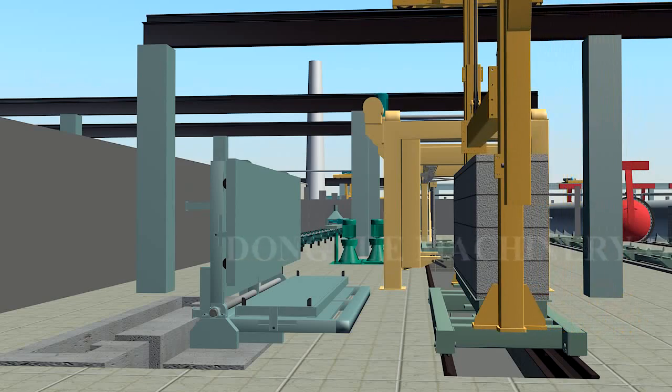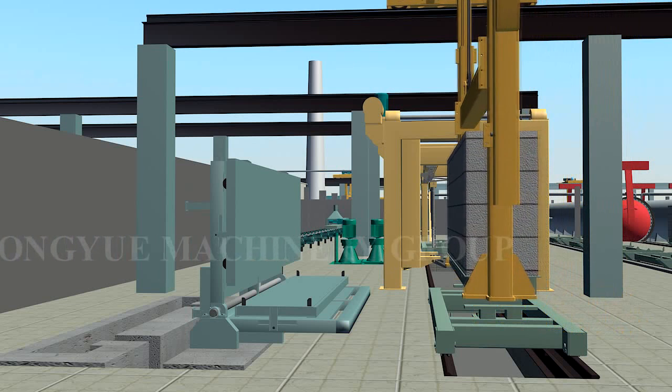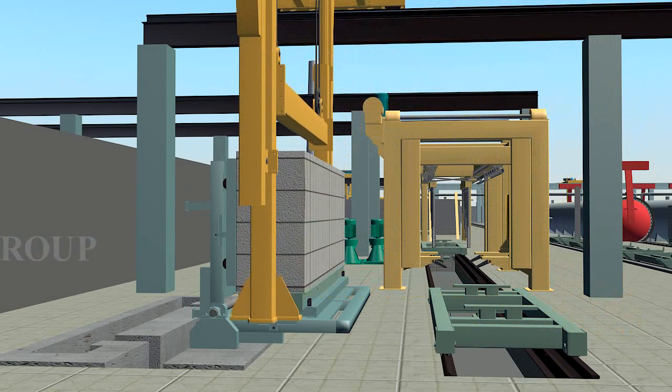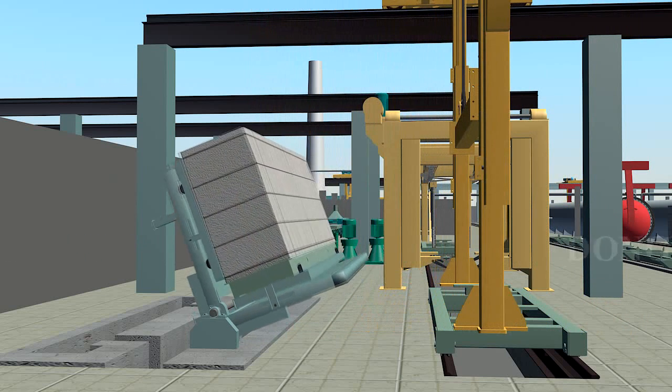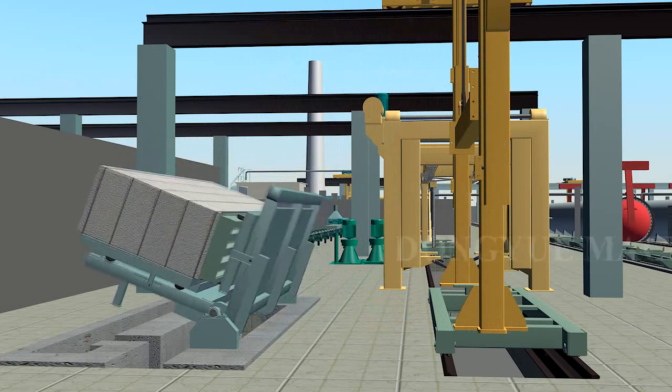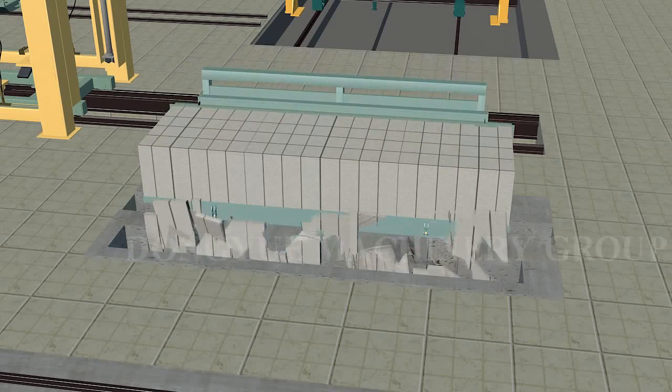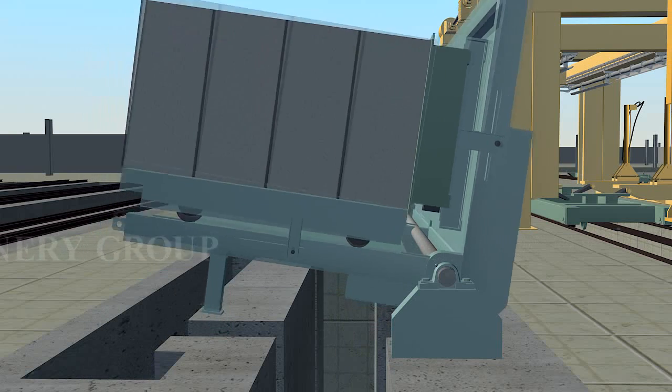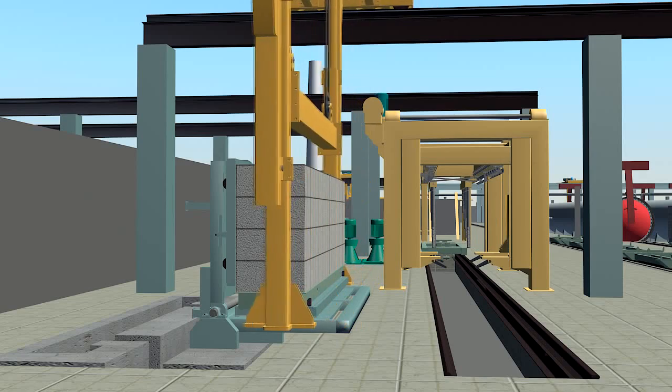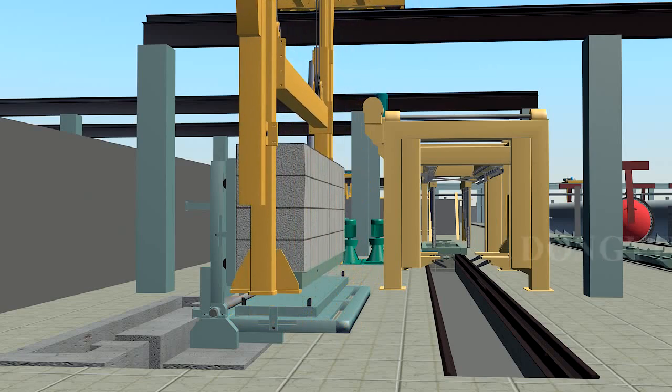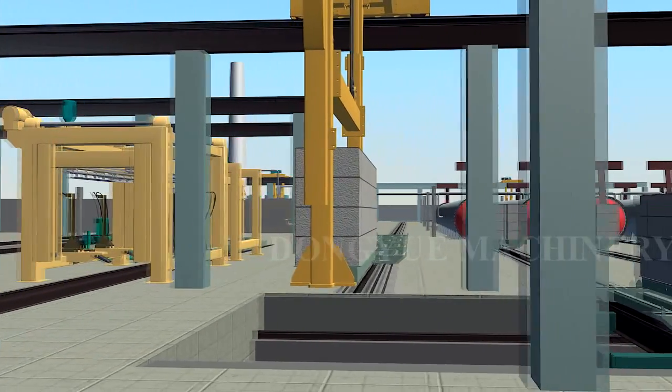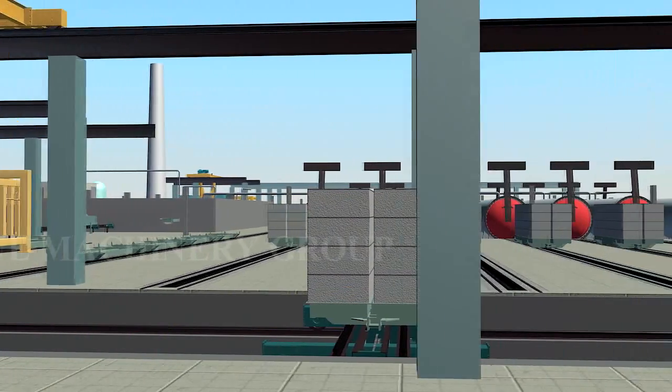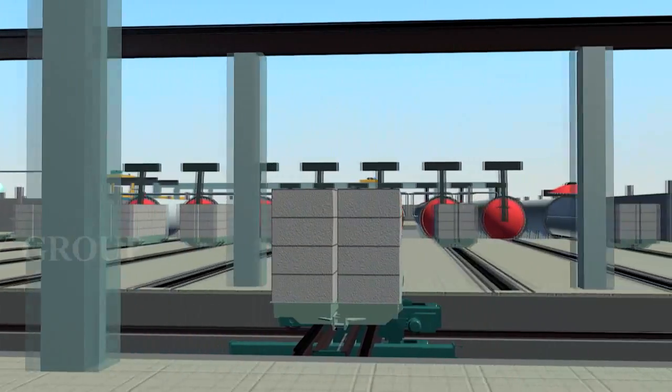Crane lifts the block to reversal table, remove the bottom waste material, then the grouping crane will move block on steam trolley. Enter the autoclave through automatic entering autoclave device.